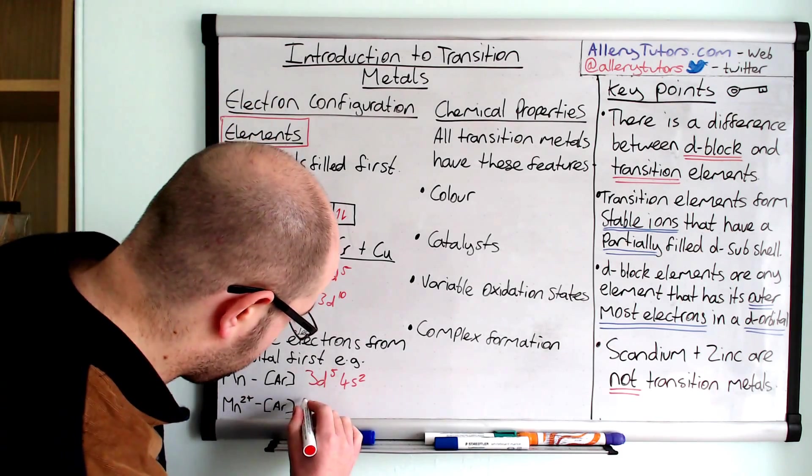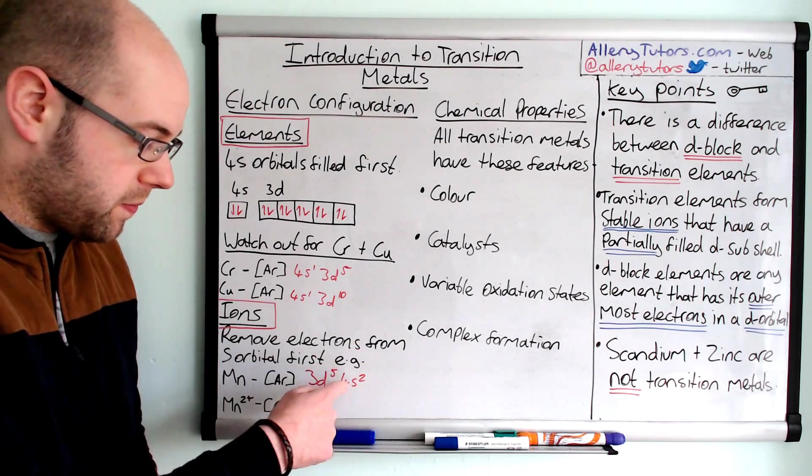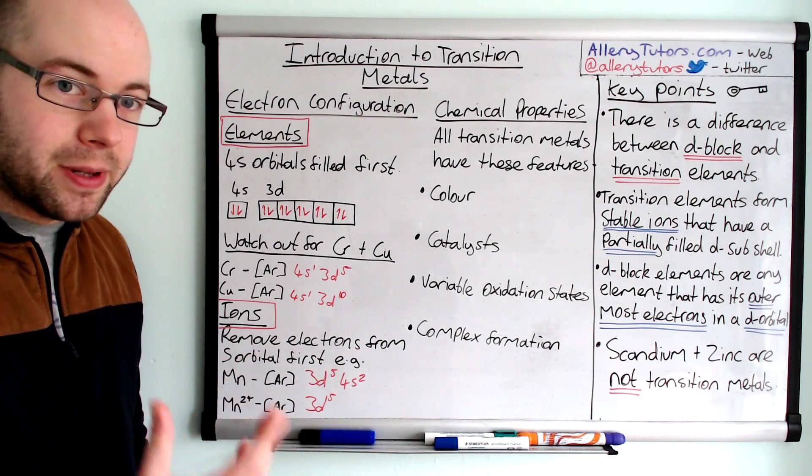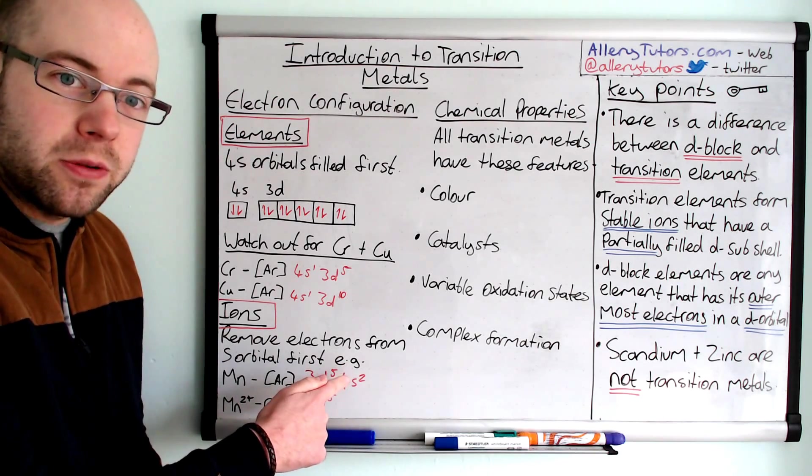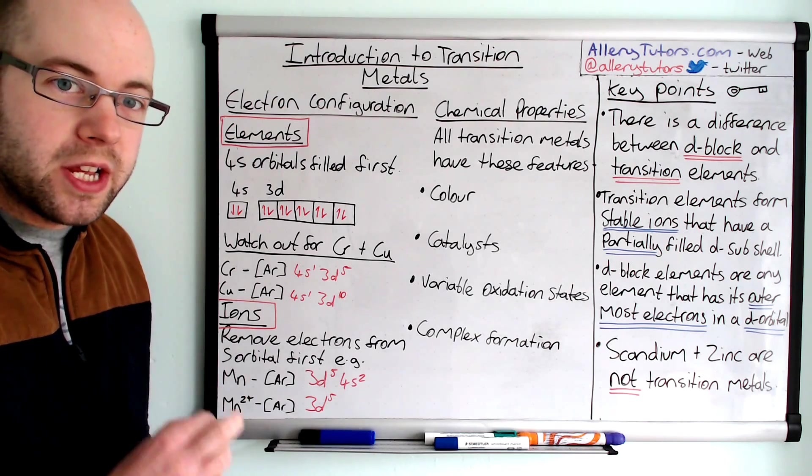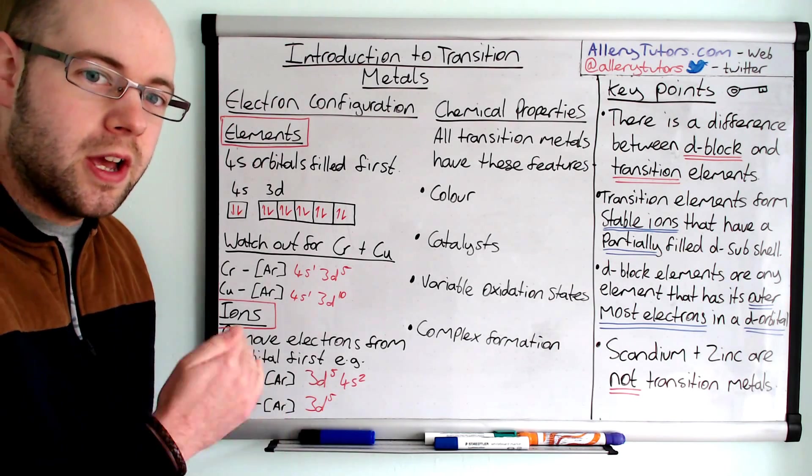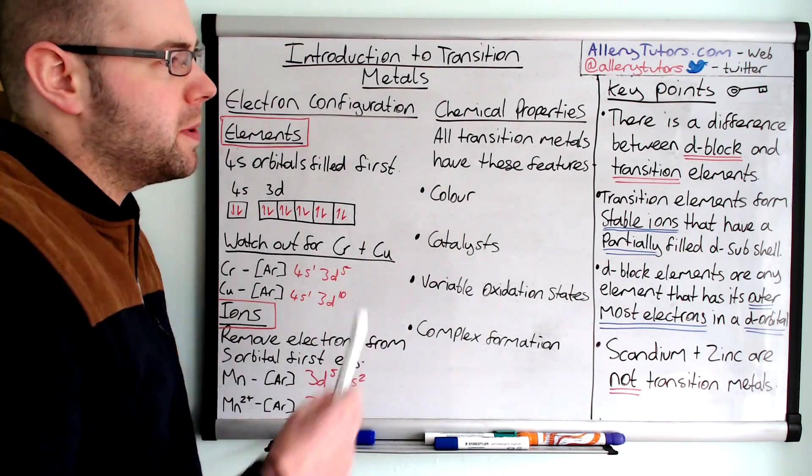Now, once you've removed the electrons from the 4s, if you have, say, for example, a 3 plus ion, for example iron, so Fe3+, you would remove the electrons from the s orbital first, then you'd remove an electron from the d orbital. But it is really important, you always remove electrons from the s orbital first before the d orbital. That's really crucial.